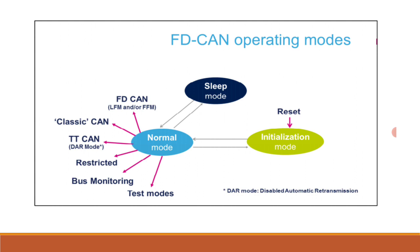When the CAN is in normal mode, the user can select different specific modes: Classic CAN mode; FD CAN mode, which includes Long Frame Mode (LFM) and/or Fast Frame Mode (FFM); TTCAN mode for time-triggered communication, in which automatic retransmission must be disabled (DAR mode); and restricted mode, where the controller can receive and acknowledge data frames but cannot send frames — useful for applications adapting to different CAN bit rates. Bus monitoring mode allows the controller to receive frames but not acknowledge them, enabling analysis of CAN bus traffic without affecting it.